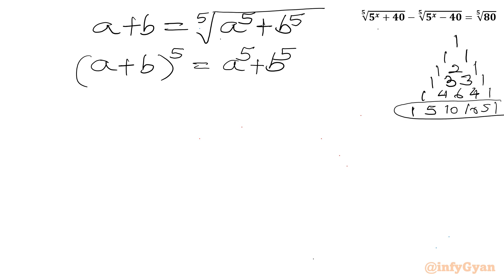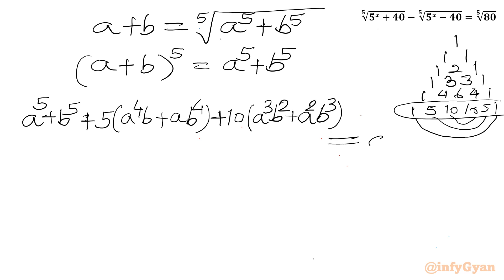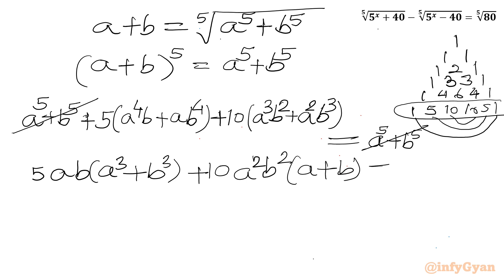Let us expand the LHS. Grouping symmetric terms: A⁵ plus B⁵, then 5 times (A⁴B + AB⁴), then 10 times (A³B² + A²B³). The RHS is A⁵ plus B⁵. We can cancel A⁵ + B⁵ from both sides, giving: 5(A⁴B + AB⁴) + 10(A³B² + A²B³) equals 0.